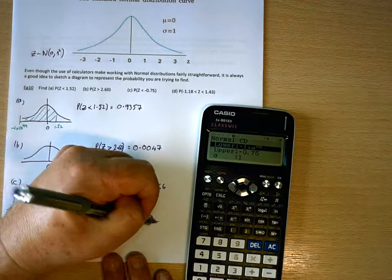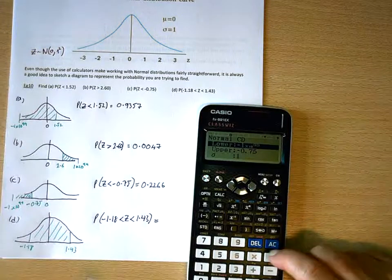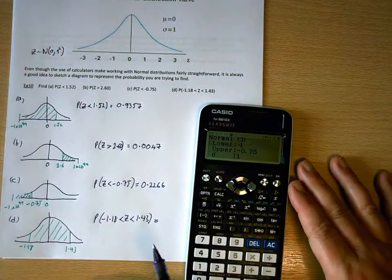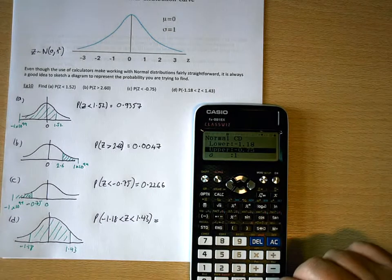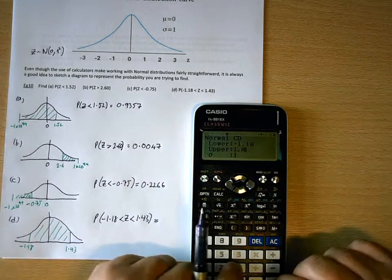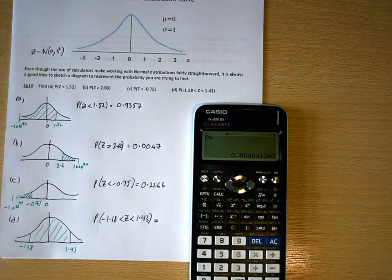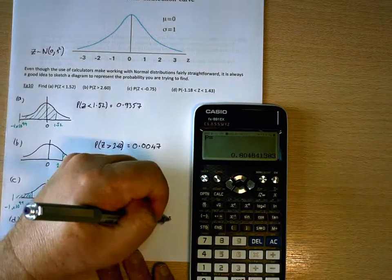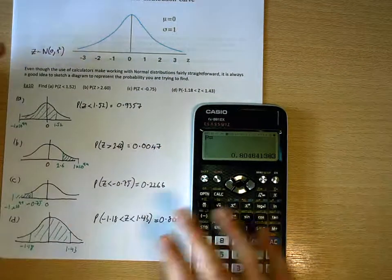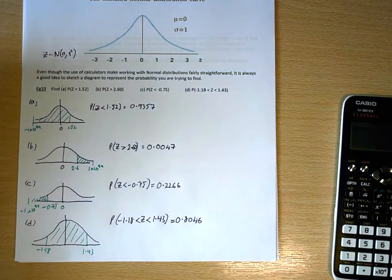So life has become much easier with the use of the calculator. So the lower boundary is going to be negative 1.18, the upper boundary 1.43, giving me a probability of 0.8046. So that's EG10.